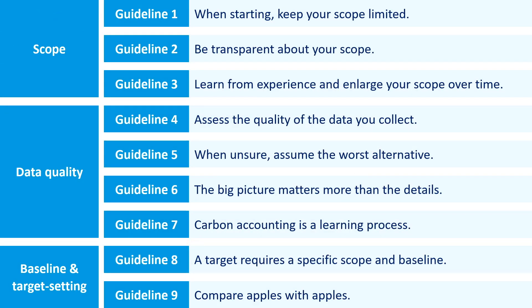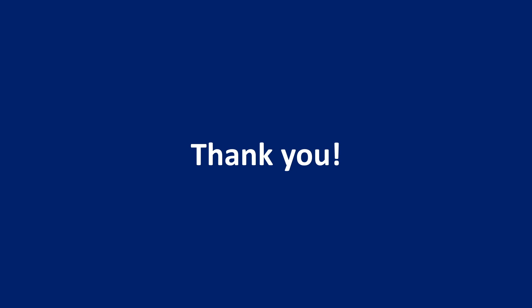We've been through all of the guidelines planned for this video. On the screen, you see an overview of all nine guidelines. With regards to scope: keep your scope limited when starting; be transparent about your scope; learn from experience and enlarge your scope over time. With regards to data quality: assess the quality of the data you collect; when unsure, assume the worst alternative; the big picture matters more than the details; and carbon accounting is a learning process. With regards to baseline and target setting: a target requires a specific scope and baseline; and compare apples with apples. Thank you for watching — we hope you enjoyed it and learned some good content for getting started with your first round of carbon accounting.